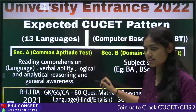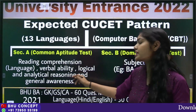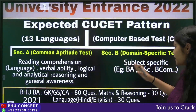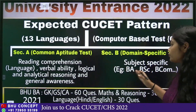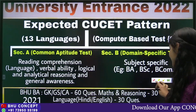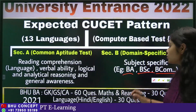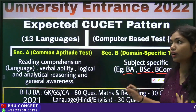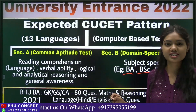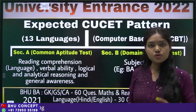Section A is the Common Aptitude Test and it deals with reading comprehension — that is, language and verbal ability — logical and analytical reasoning, and general awareness. Section B is domain-specific or subject-specific. If you're from Arts, your paper will be set for BA. If you're from Science, your paper will be for BSc, and if you're from Management or Commerce, your paper will be for BCom. For BA students there are subjects like Political Science, History, and Geography. For BSc there will be Maths, Physics, Chemistry, and Biology. For BCom there will be Marketing, Finance, and related subjects.